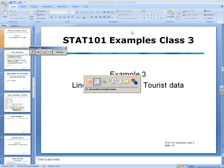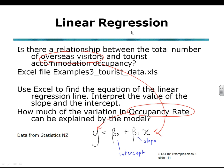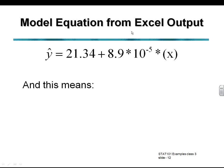Back to the question. Interpreting our equation, the equation from the Excel output. Y is 21.34 plus 8.9 times 10 to the minus 5 times X.